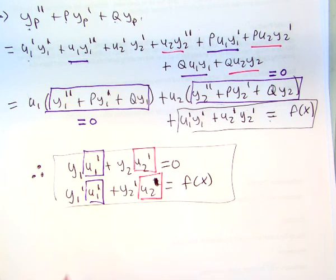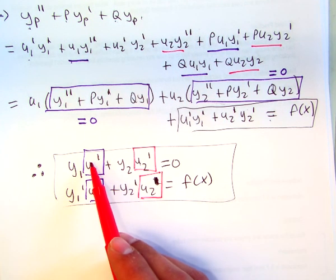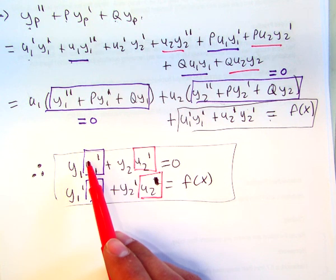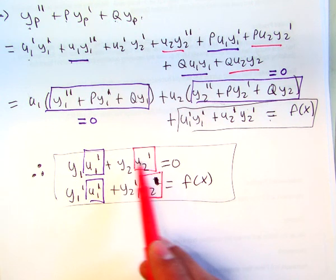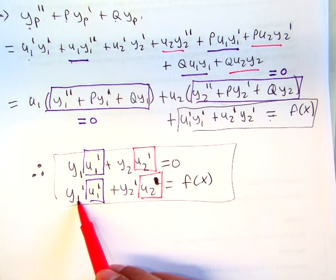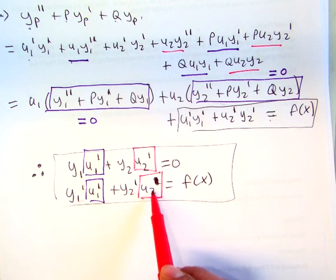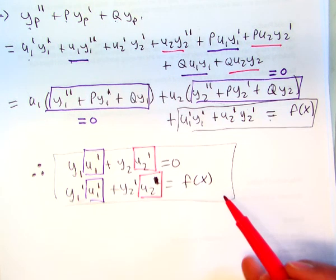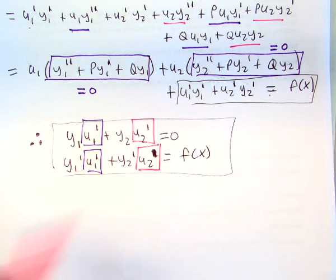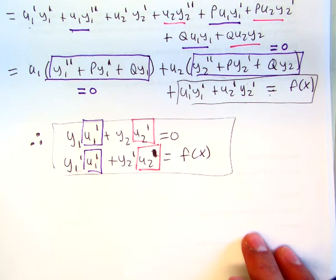All right, so if we treat this as a system of equations, kind of like ax plus by equals some constant, and then dx plus ey equals some other constant, we're going to solve with Cramer's rule. We could do substitution, elimination, and some other methods, but Cramer's rule will be helpful.